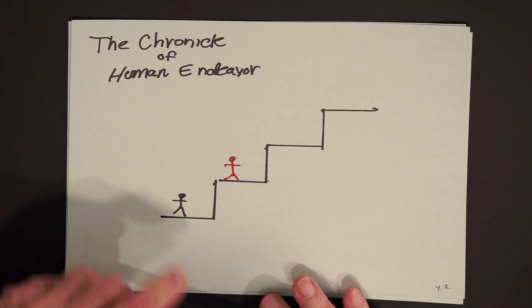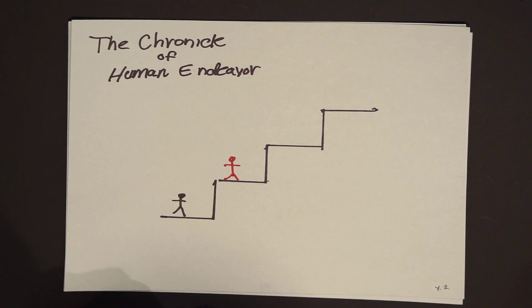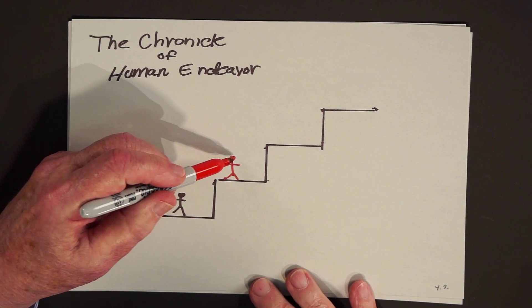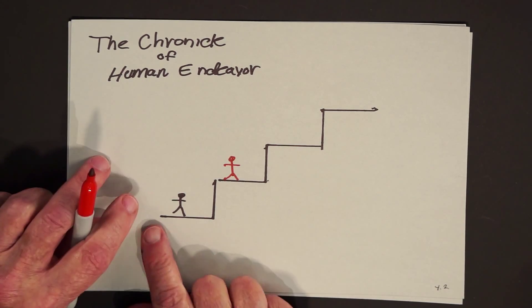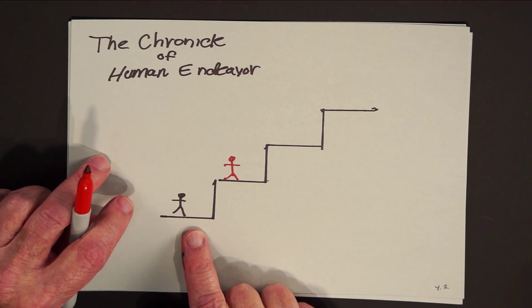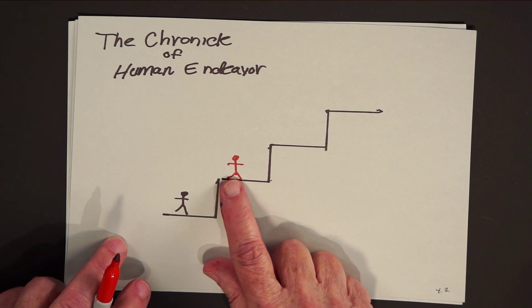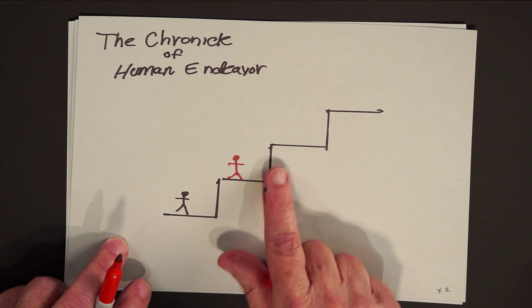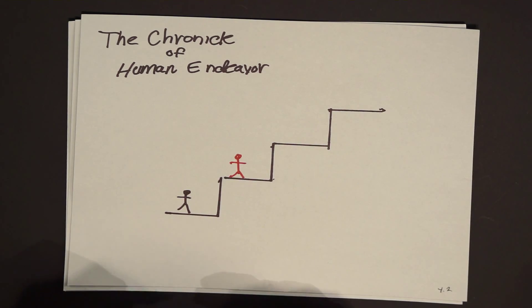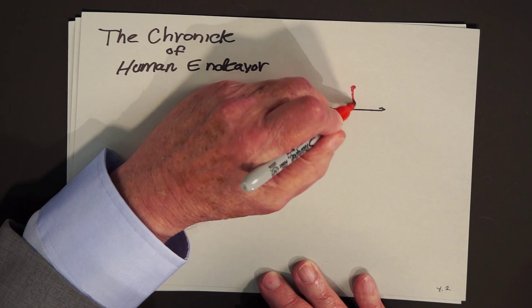And then from the next step, there's what we could call a good news, bad news story. The good news is that from this vantage point, you can see better what's going on on the step below than the people who are already there. The bad news is that you can see the next obstacle while the people down here don't even know that that obstacle exists. And so what happens is we keep going from obstacle to obstacle.